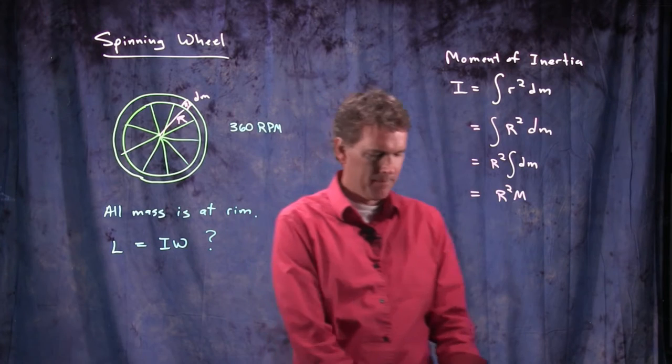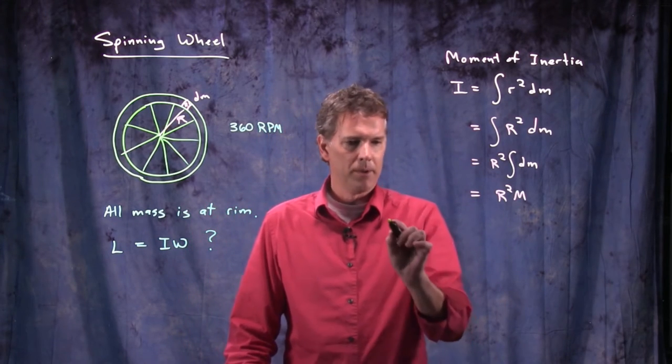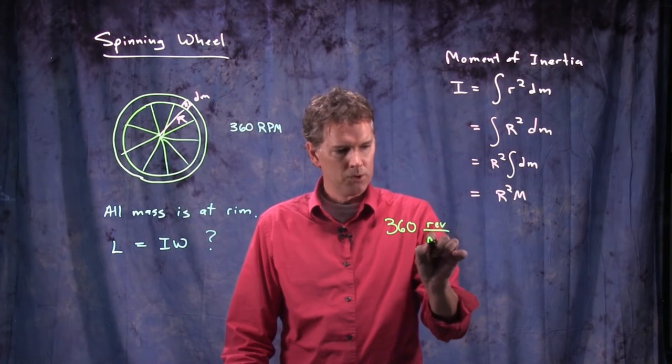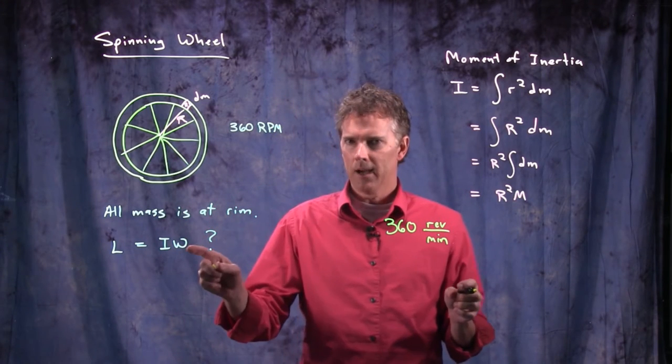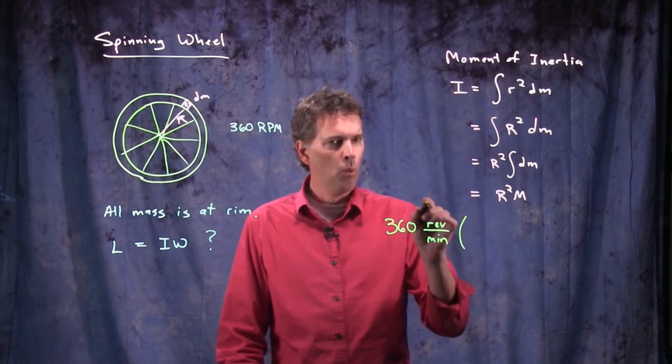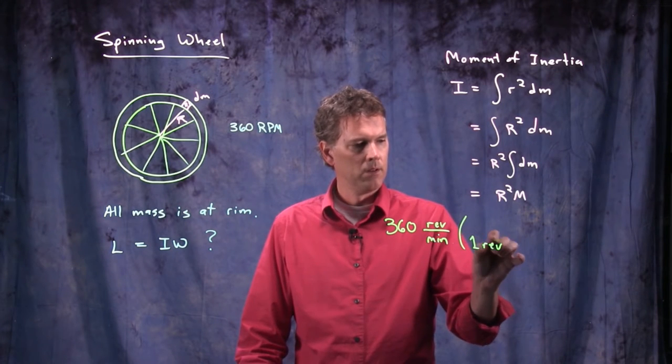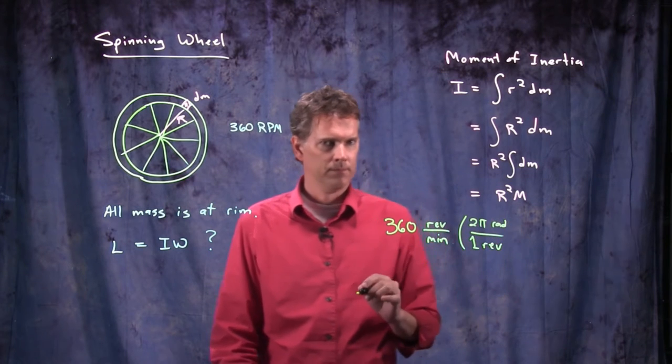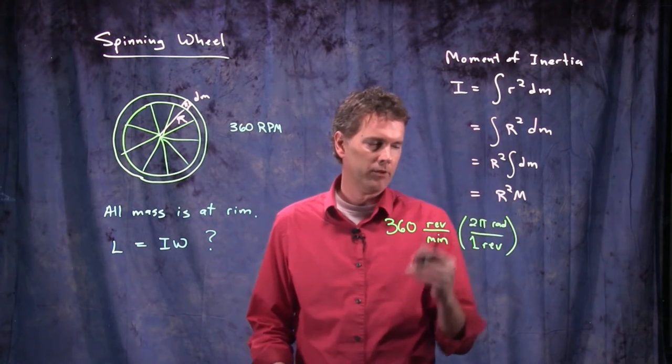What about omega? We know that this thing is going at 360 rpm. What is that? 360 revolutions per minute. If I want to convert that to omega, all I have to do is multiply it by 1 each time. So 1 revolution is 2 pi radians.